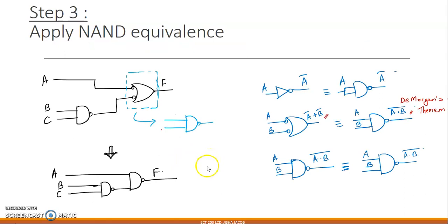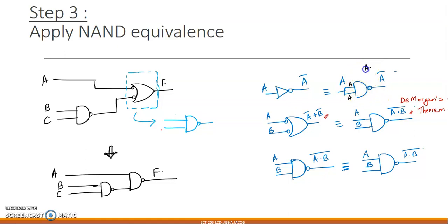We now apply the NAND equivalents. The equivalent NAND gate of a NOT gate works like this: a NOT gate has one input A and output A̅. If we take a NAND gate and give the same input A to both inputs, the output is A·A whole bar, which equals A̅ itself. Therefore, this NAND gate replaces every NOT gate — this is the NAND equivalent of a NOT gate.